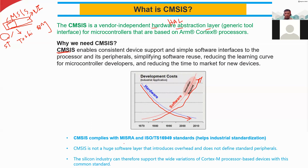CMSIS compilers comply with MISRA and ISO-TS16949 standards, which must be followed. Please remember the standard name ISO-TS16949 — it helps industrial standardization. Different vendors using cores from the same or different companies develop new microcontrollers, and if everyone followed different standards it would be complicated for users. CMSIS is not a huge software layer that introduces overhead and does not define standard peripherals, so it does not cause problems for the actual hardware microcontroller.